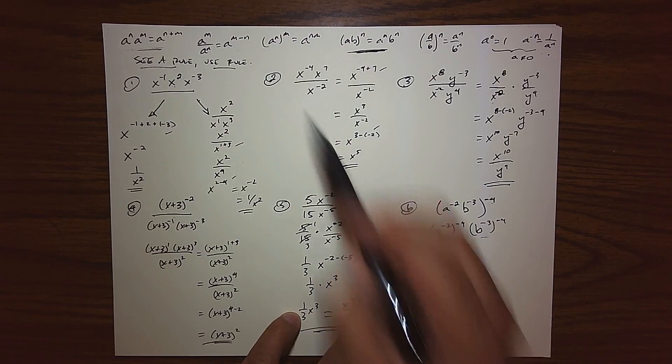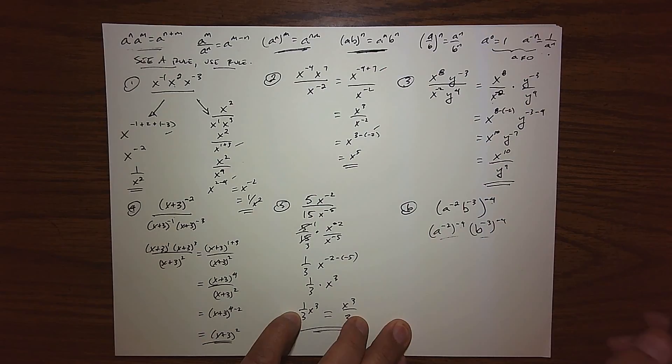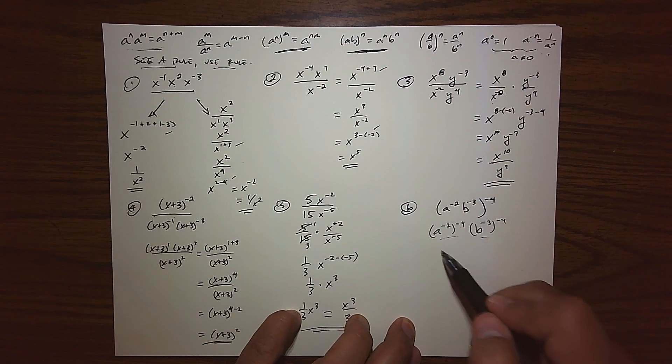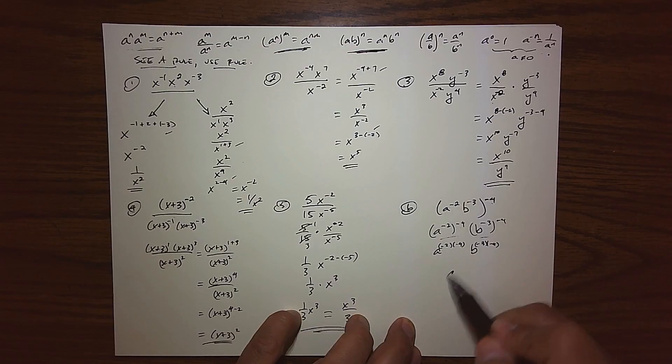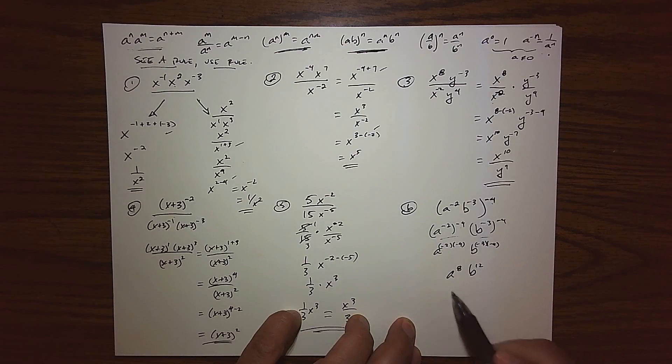Now I have the opportunity to use my power of a power, exponent of an exponent. So we multiply our exponents here, and we multiply our exponents there. And that gives us a to the 8th, and that gives us b to the 12th. And so there's nothing left to do.